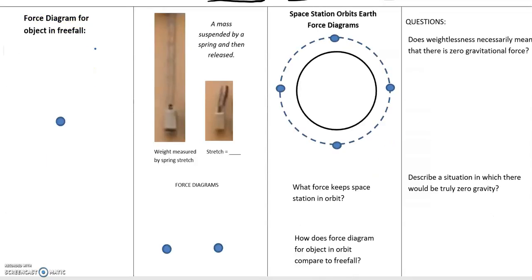The next column, the picture is hard to see. This is a mass that's attached to a spring and it's stretched out. It's a suspended mass. It's hanging there in the stretch of the spring. It represents the force, the amount of force pulling down on the spring, which is the weight of this mass. So we can even measure the weight with the spring stretch. And then the spring is released.